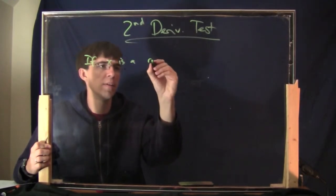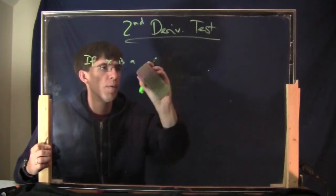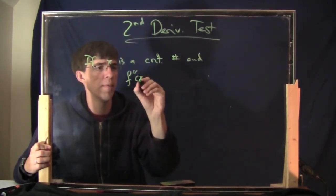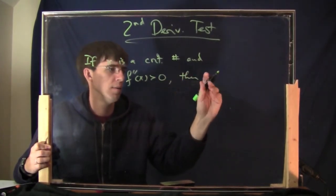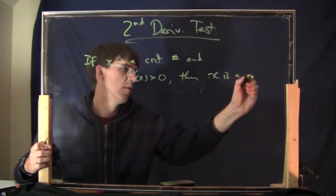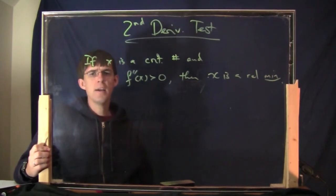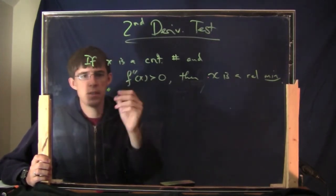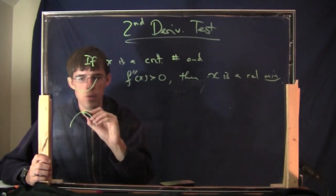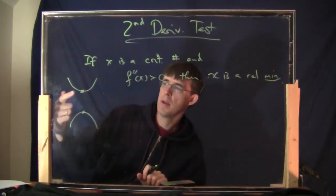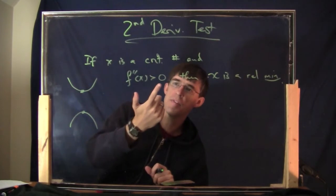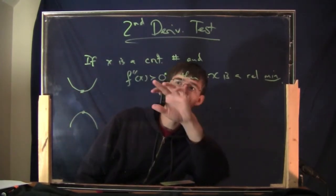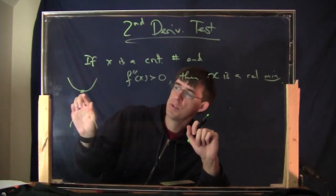The second derivative test involves critical numbers. If x is a critical number and f double prime of x is positive, then x is a relative minimum. That's because if the second derivative is positive, the curve is concave up — the smiley shape — so the point is on the bottom, making it a minimum. Conversely, if f double prime of x is negative, the curve is concave down — the frowny shape — so the point is a maximum.